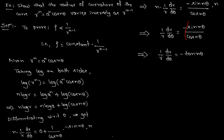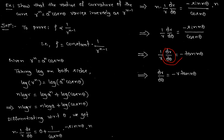We know that sin(nθ) over cos(nθ) gives tan(nθ). Since we want r1 in the formula — that is, dr by d theta — we cross multiply r to the other side, giving dr by d theta equals minus r tan(nθ). Let us call this r1, which we require in the formula to find radius of curvature for the polar curve.